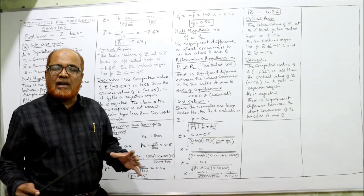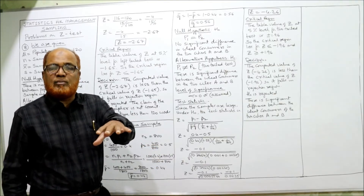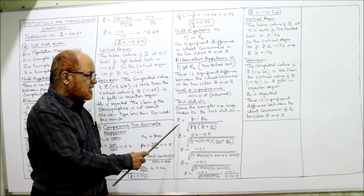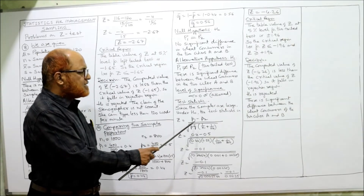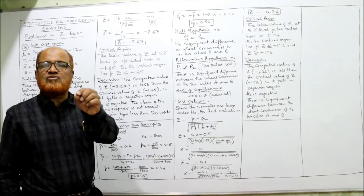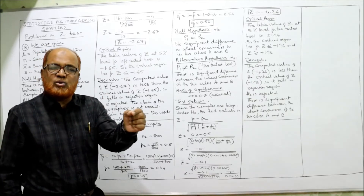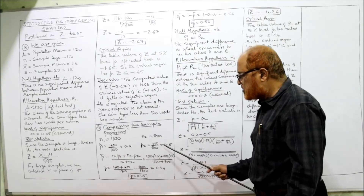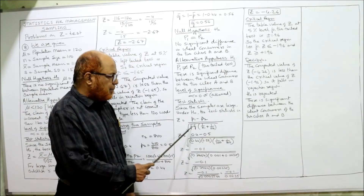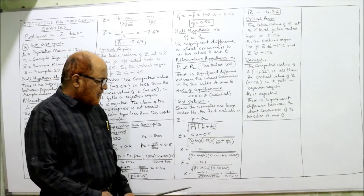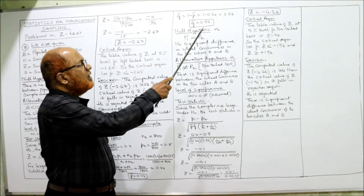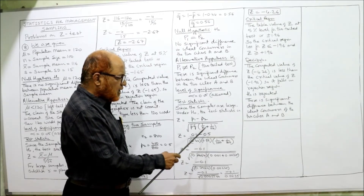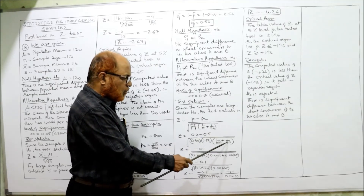Test statistic: since the sample is large (1000 in town A, 800 in town B), under H0 the test statistic Z equals P1 minus P2 divided by the square root of P-bar times Q-bar times (1/N1 plus 1/N2). P1 is 0.4, P2 is 0.5. P-bar is 0.44, Q-bar is 0.56. So the denominator becomes the square root of 0.44 times 0.56 times (1/1000 plus 1/800).